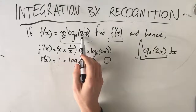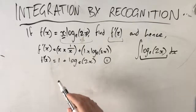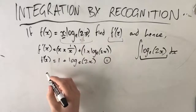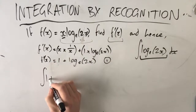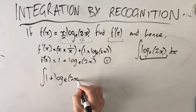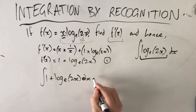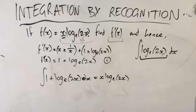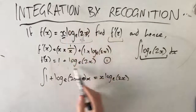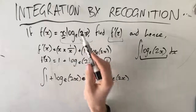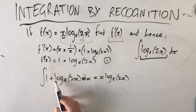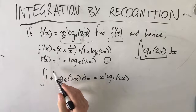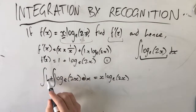So if the derivative of x·log_e(2x) is 1 plus log_e(2x), that means the antiderivative of 1 plus log_e(2x) is x·log_e(2x). So the integral of (1 + log_e(2x)) dx equals x·log_e(2x). We're starting to isolate the integral of log_e(2x), but we still have that 1, so we're going to break up these integrals — always don't forget your dx's.